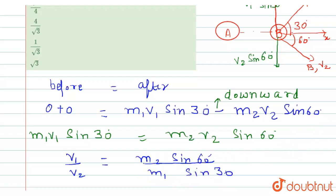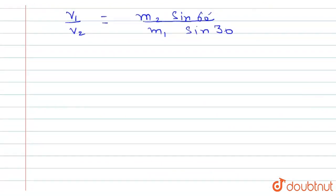Now substitute the values. M2 equals 1, sin 60 is root 3 by 2, M1 is 4, and sin 30 is 1 by 2, which equals root 3 by 4. This is the final answer.